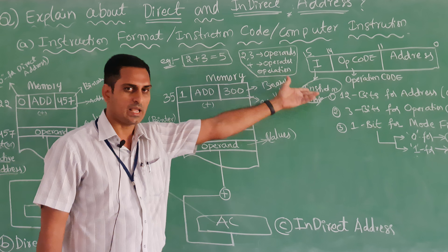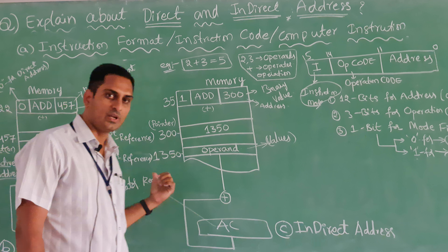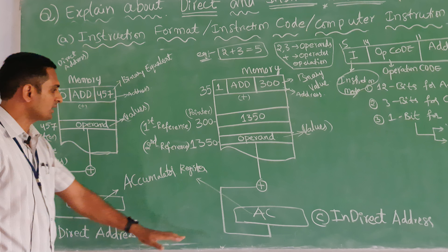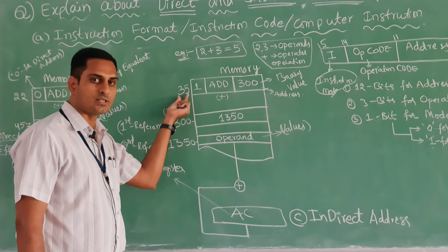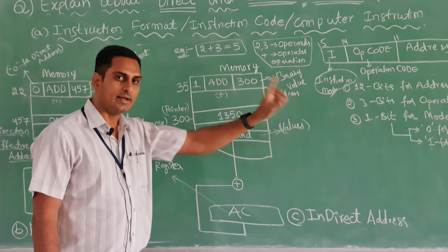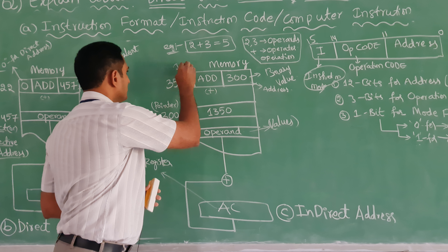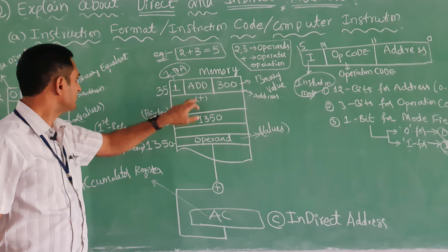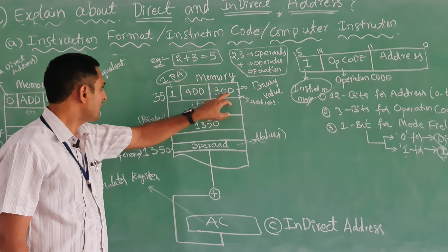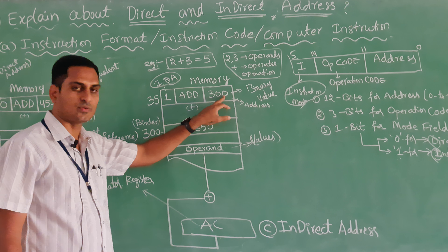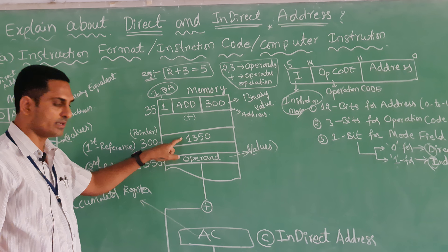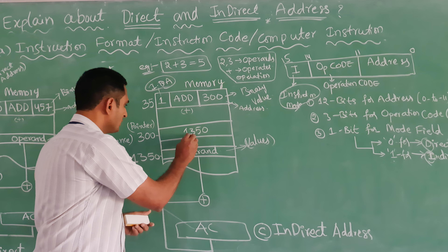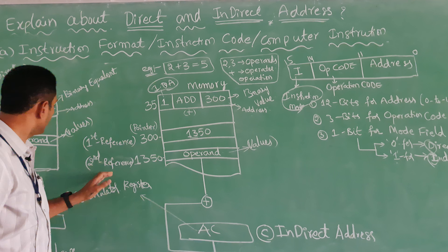Now for indirect address. Here, 1 means indirect address. This is the memory part. The operation is ADD, same as before. Here the address field contains 300, shown in binary. However, at address 300, there is no operand — instead, there is one more address field pointing to another location. So 300 is only the first reference.